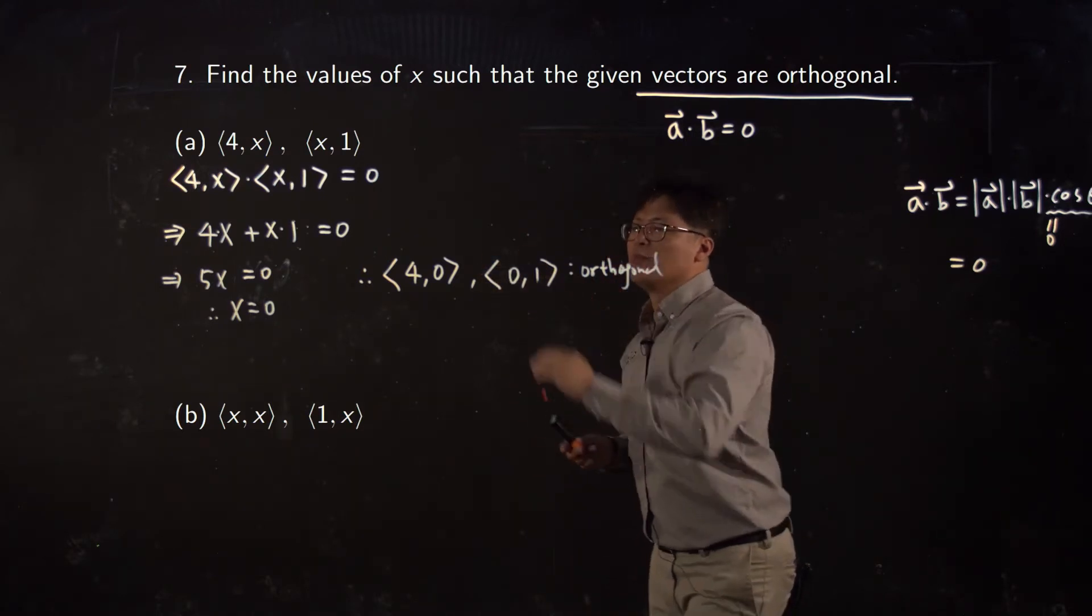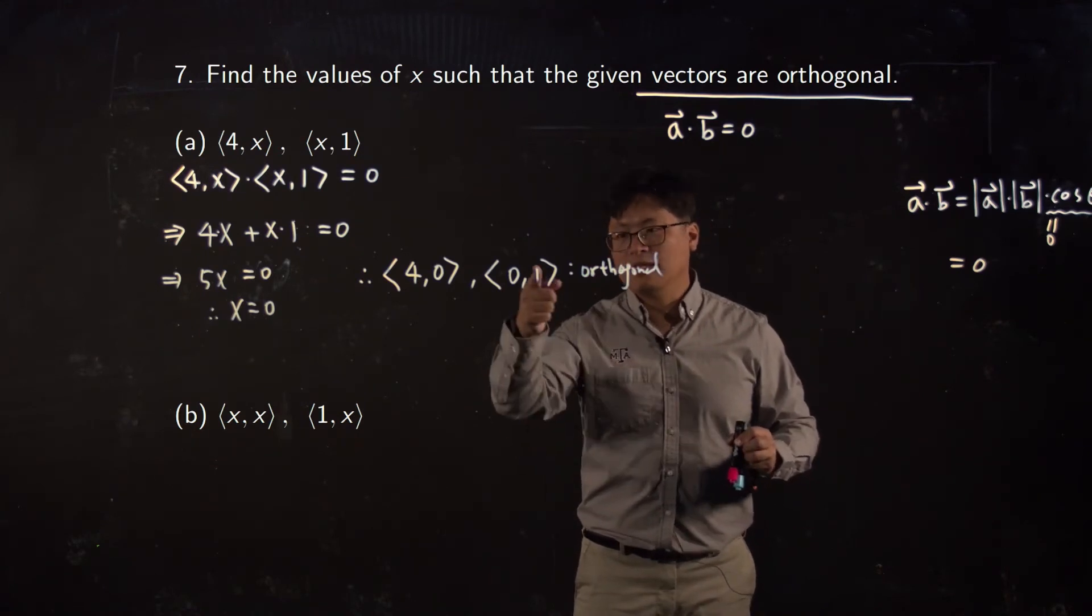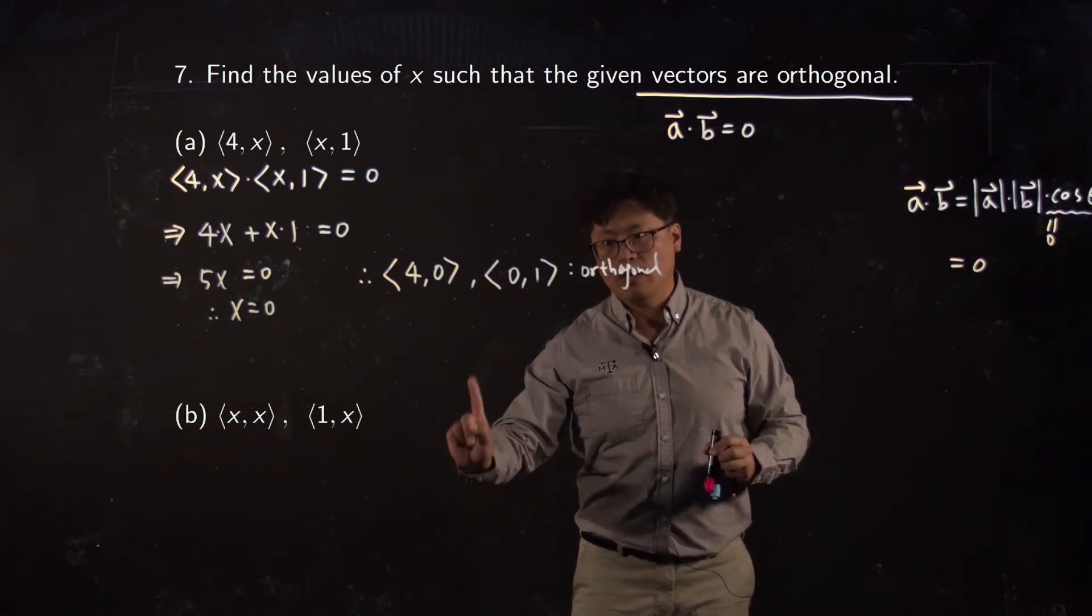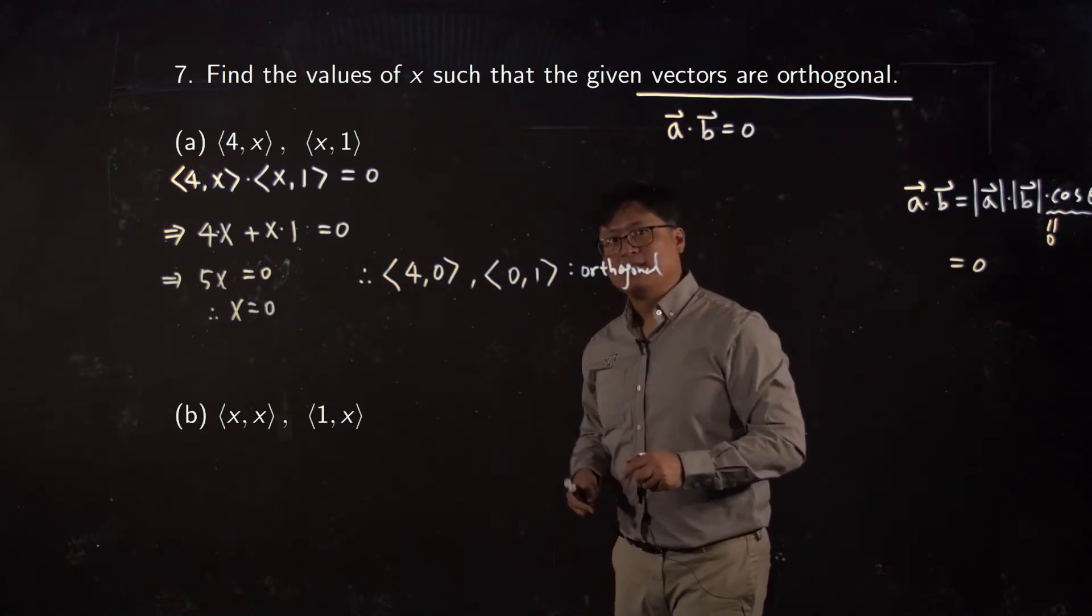orthogonal. Imagine about it: (4, 0) is like this, four run and zero, right? And (0, 1) is like a vertical line. You see, that's exactly 90 degrees.